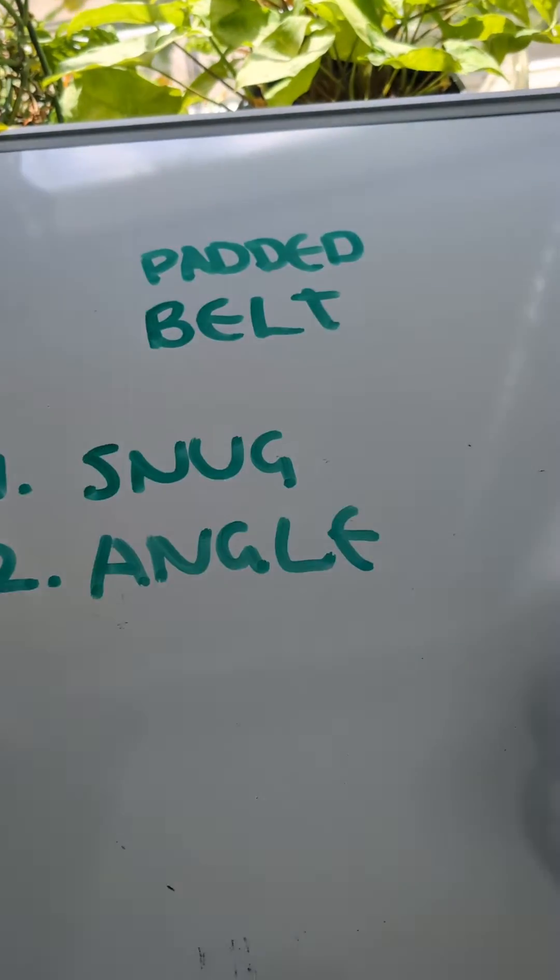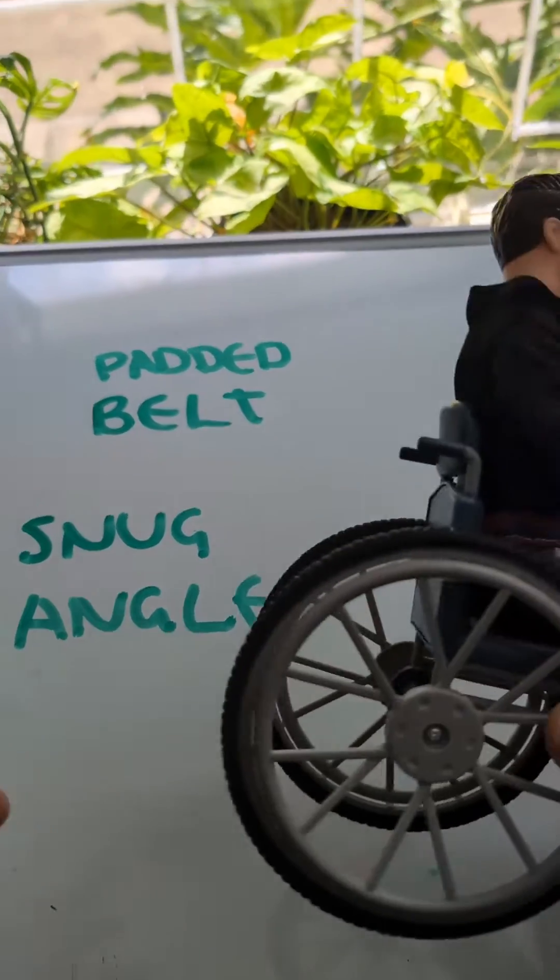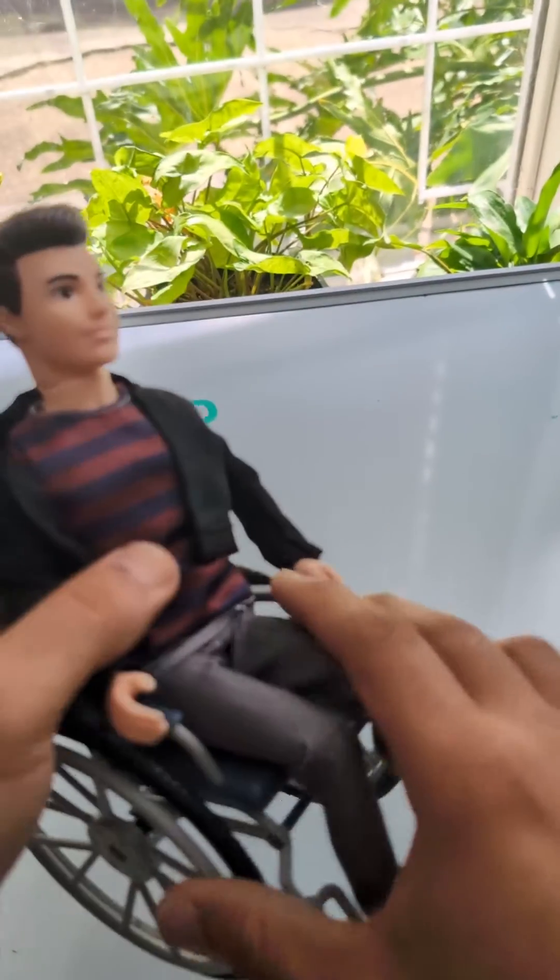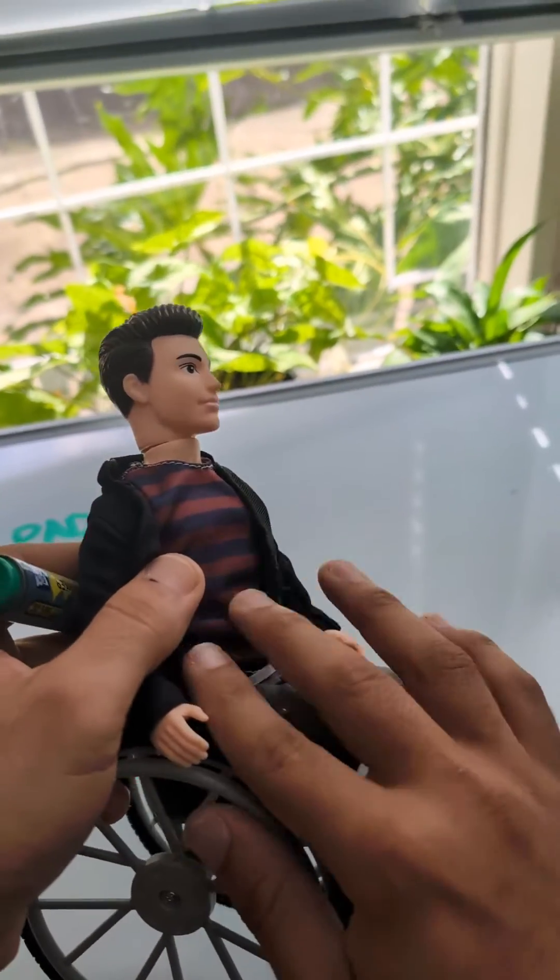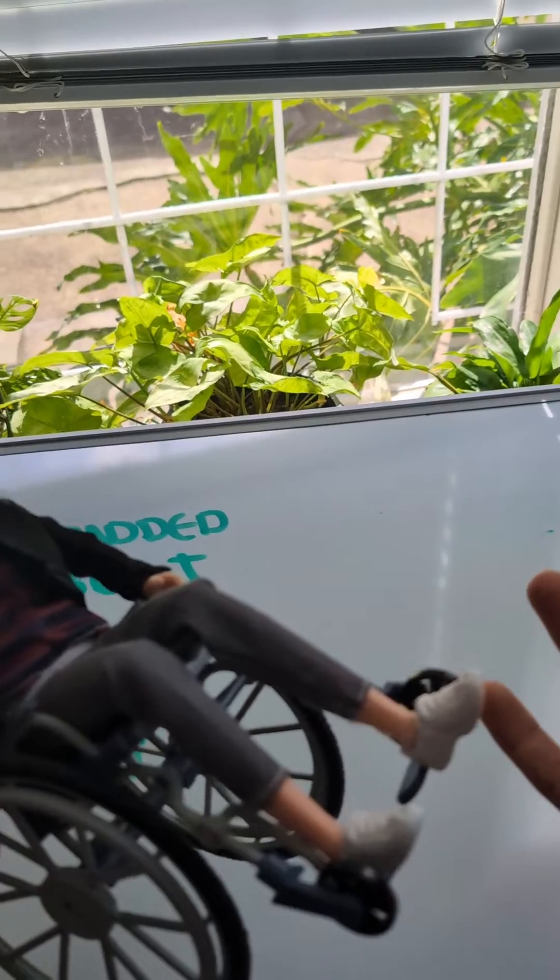A padded belt. Now, a padded belt needs to be snug, and it needs to be at the right angle. Snug meaning if it's just loose and you can fit your hand or something underneath it, it's not really doing anything.